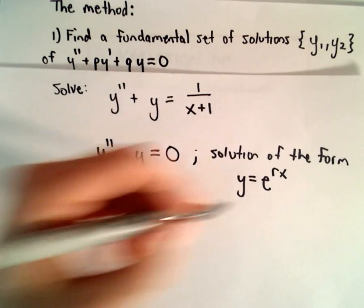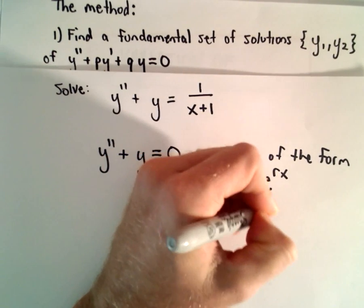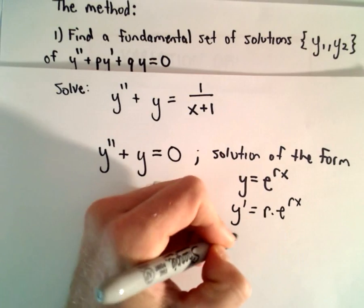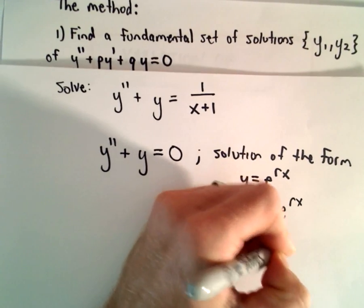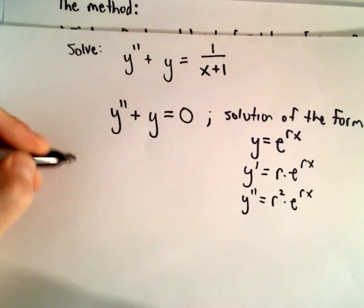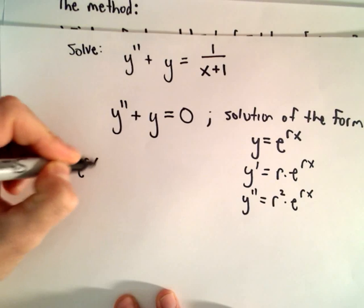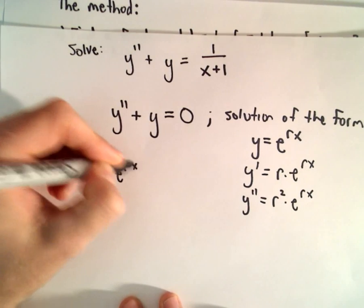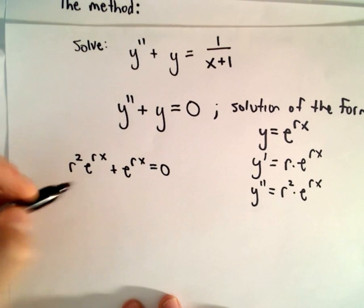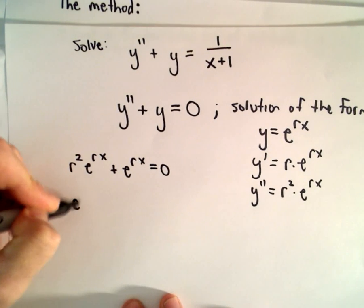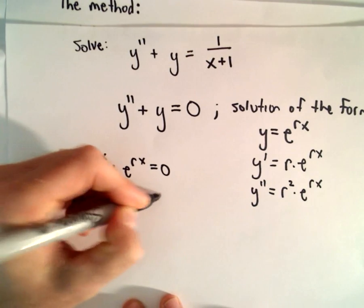We can simply substitute that in. If we take the first derivative, we get r times e to the rx, and the second derivative gives r squared times e to the rx. Substituting in, we've got r squared times e to the rx plus e to the rx equals 0. We can factor out the e to the rx, leaving us with r squared plus 1 equals 0.